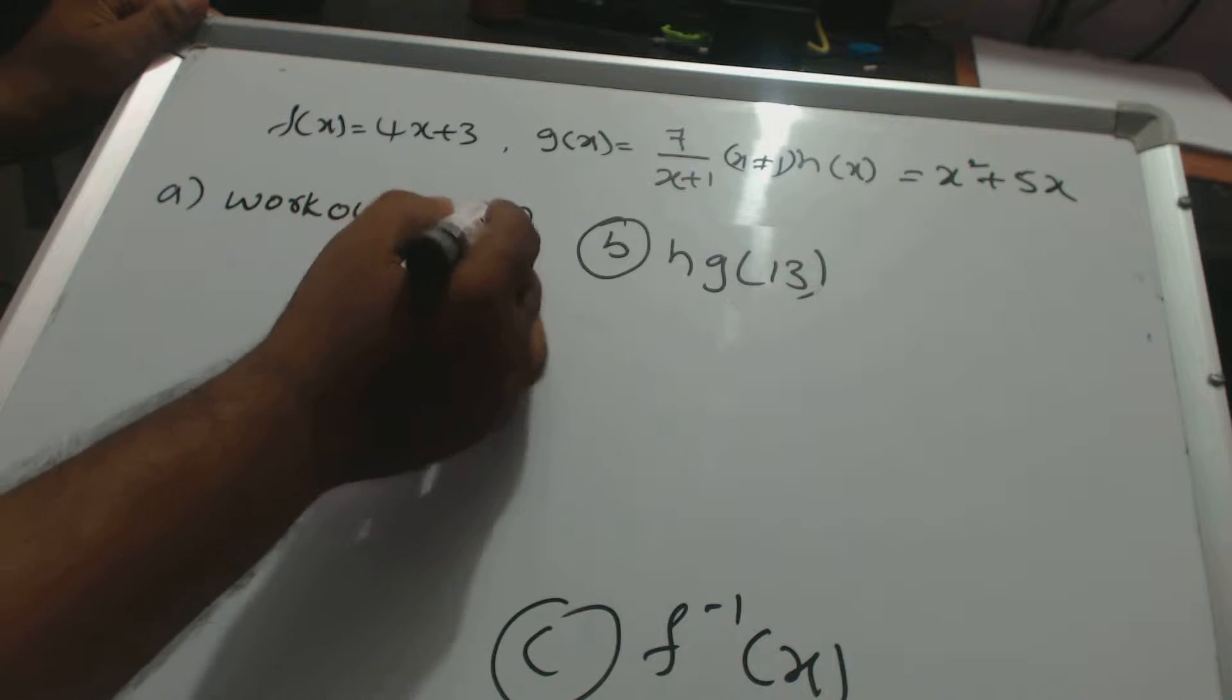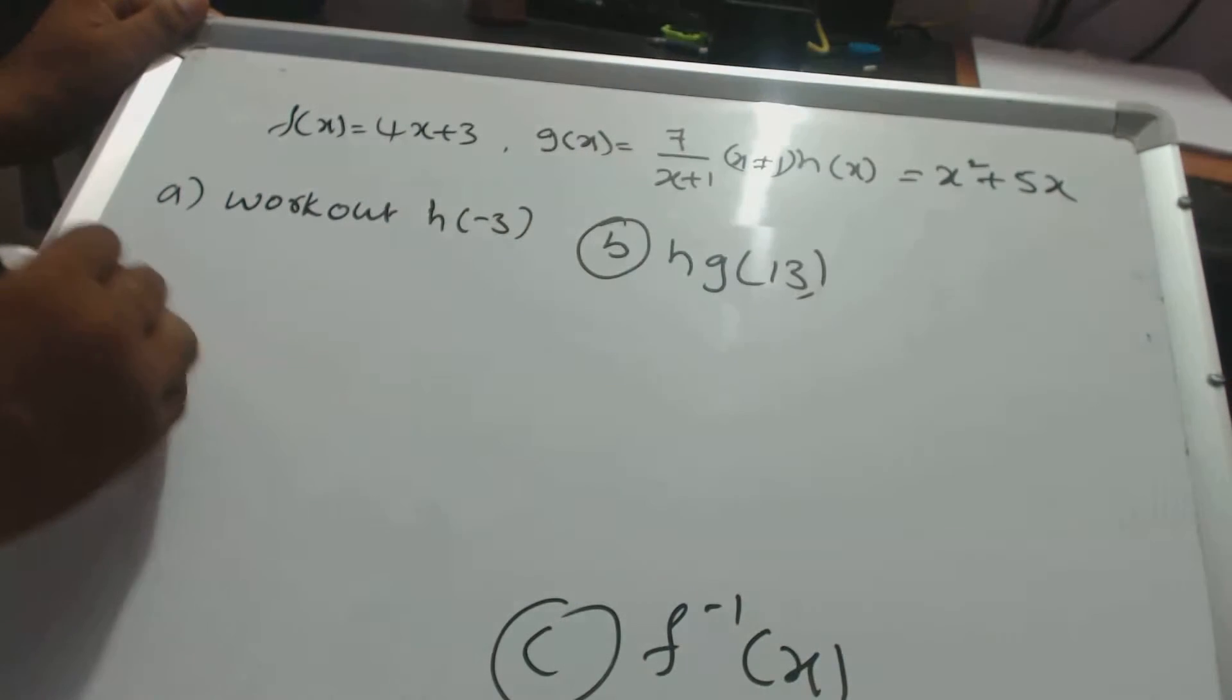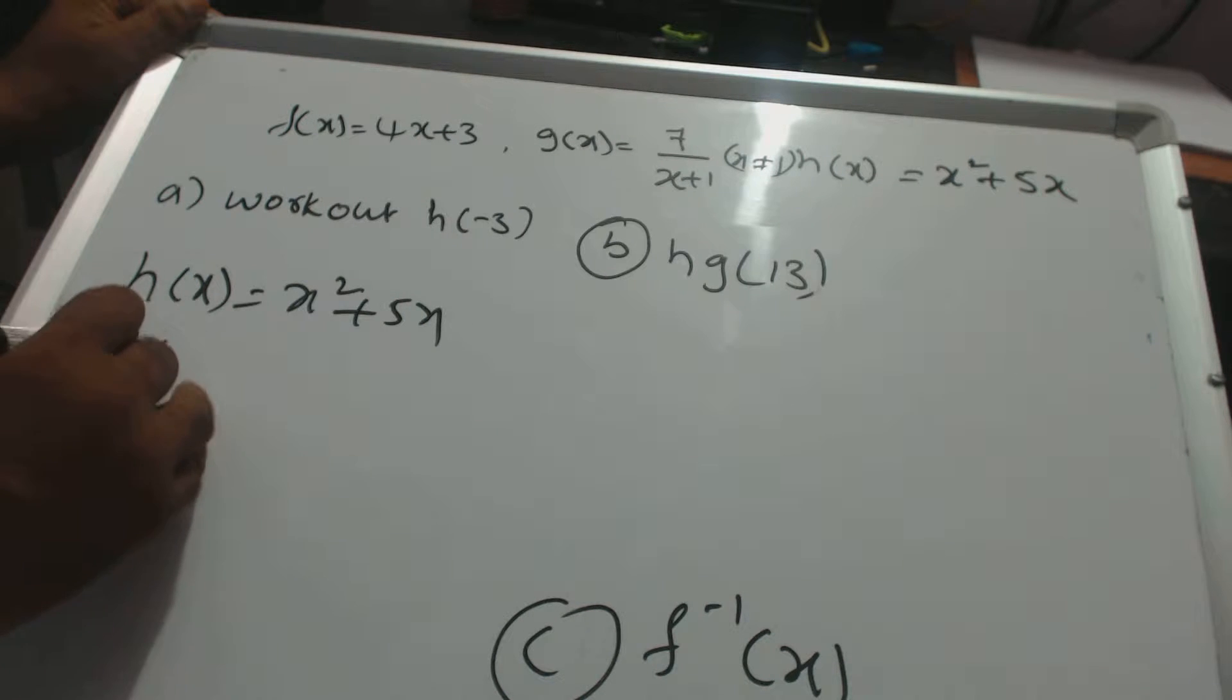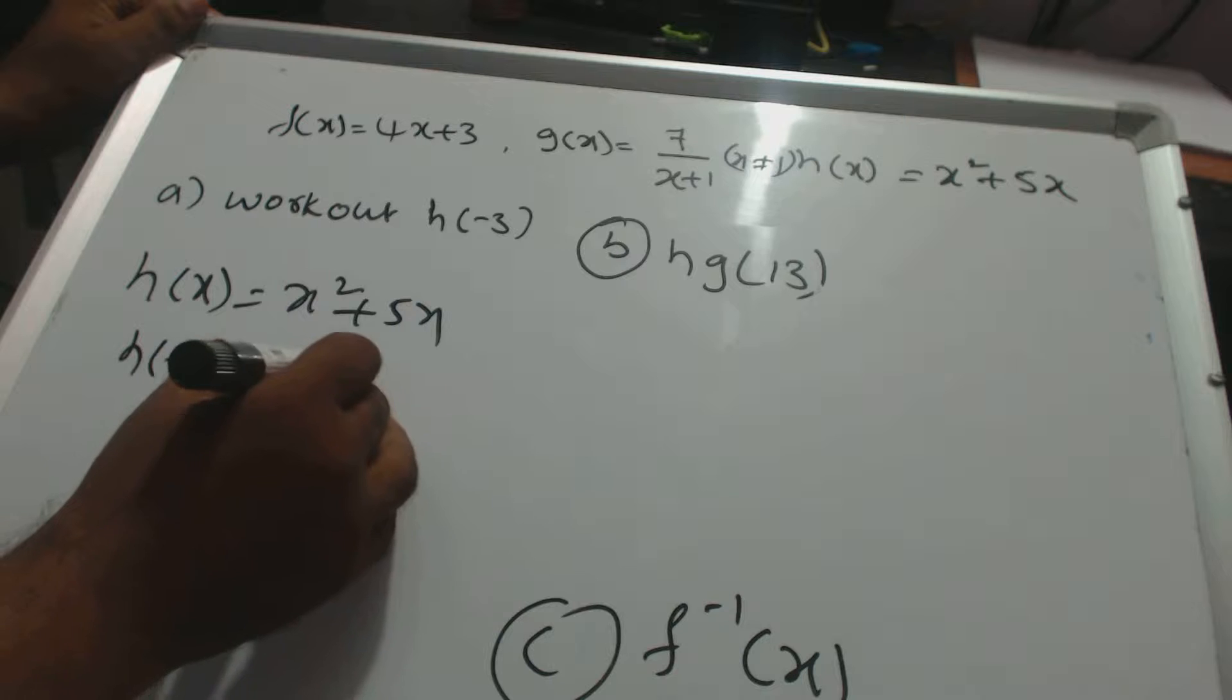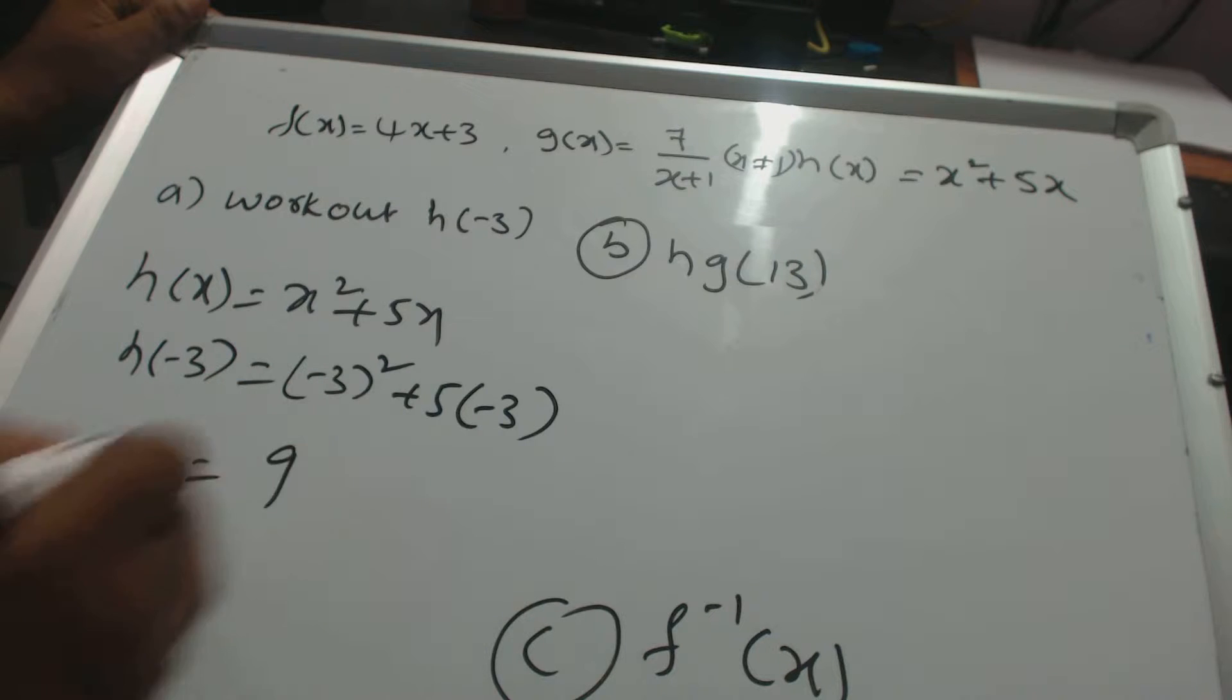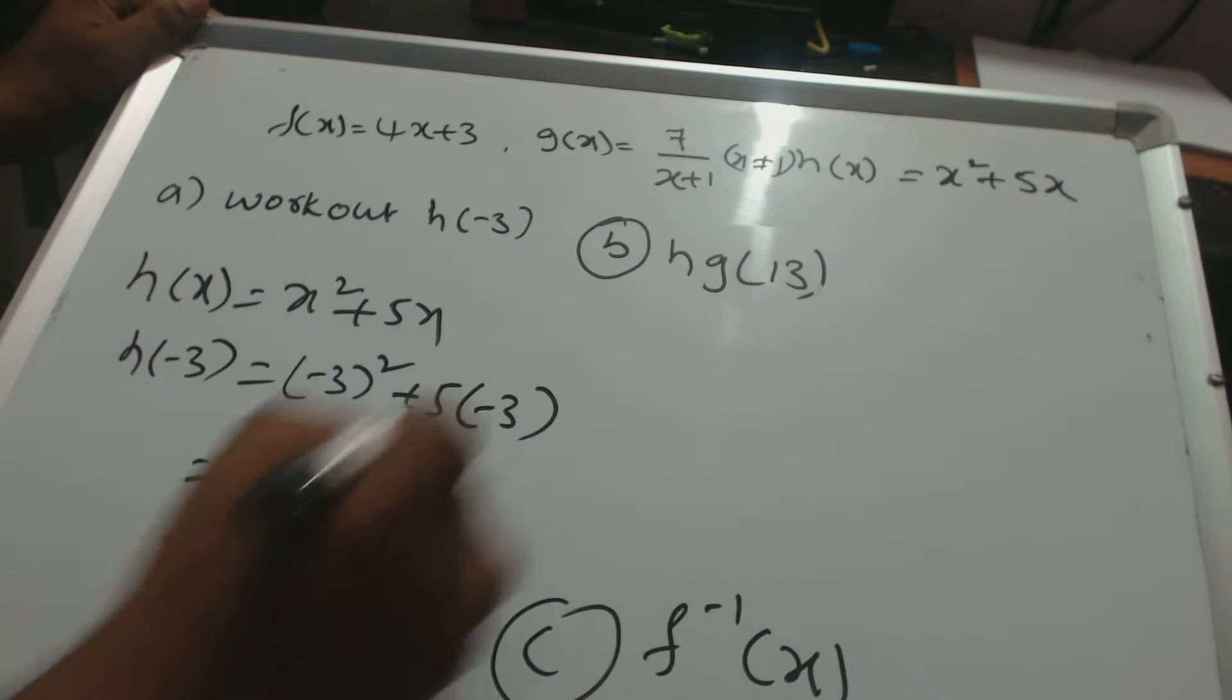Let's work out h(-3). To find h(-3), substitute -3 wherever x appears in the function. Since h(x) = x² + 5x, we have h(-3) = (-3)² + 5(-3) = 9 - 15 = -6.